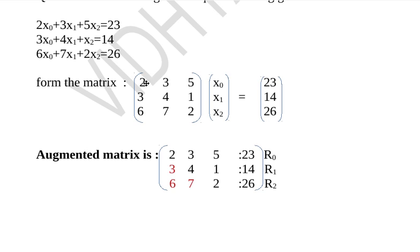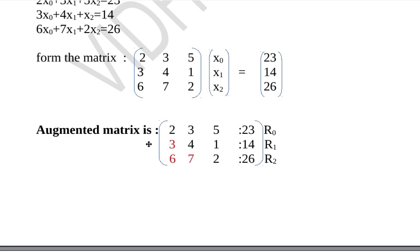The matrix is formed using the coefficients. The first column is the coefficients of x0: 2, 3, 6. The second column is the coefficients of the second variable: 3, 4, 7. The next column is the coefficients of x2: 5, 1, 2. This is multiplied with x0, x1, x2 and equals the constants 23, 14, and 26. We can represent this as an augmented matrix: [2, 3, 5 | 23], [3, 4, 1 | 14], [6, 7, 2 | 26].